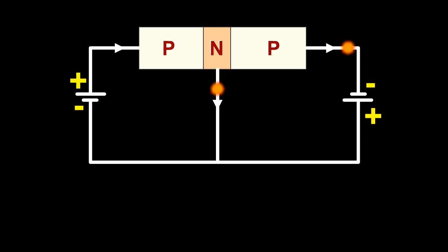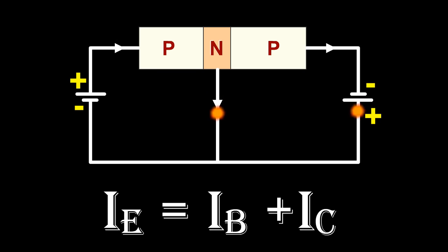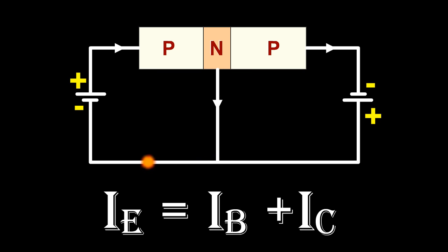Applying Kirchhoff's current law to the circuit, the emitter current is the sum of collector current and base current, i.e. IE is equal to IB plus IC. This equation is the fundamental relation between the currents in a transistor circuit. This equation is true regardless of transistor type or transistor configuration.